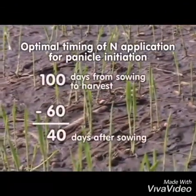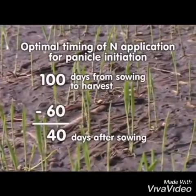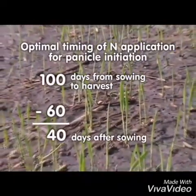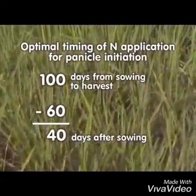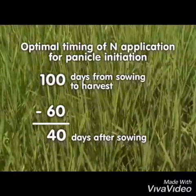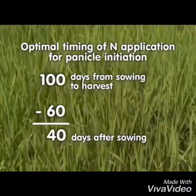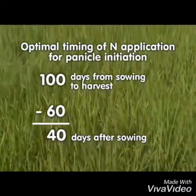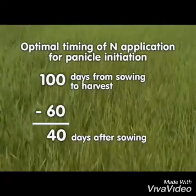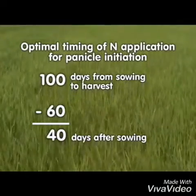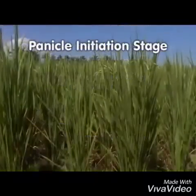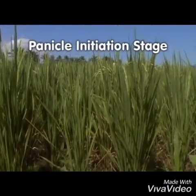For direct seeded rice, simply deduct 60 days from the number of days from sowing to harvest. For example, with a variety in the field for 100 total days, simply deduct 60 days from this number. This means nitrogen for panicle initiation should be applied at about 40 days after sowing.